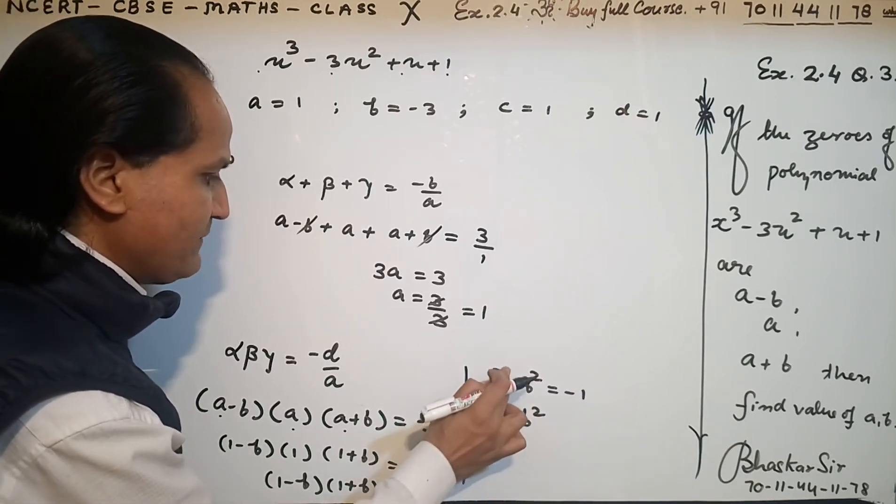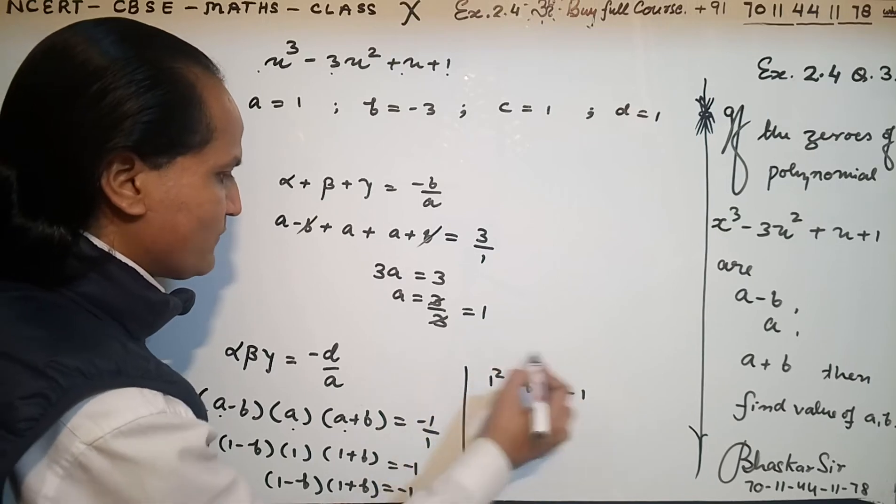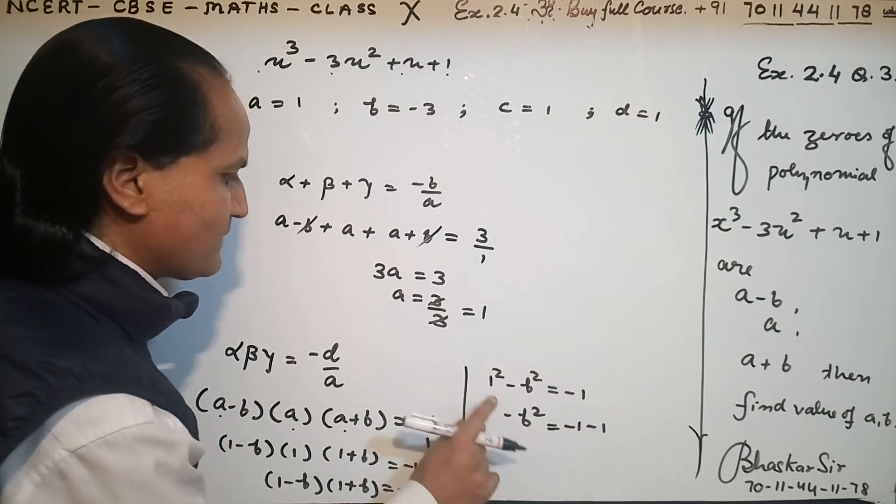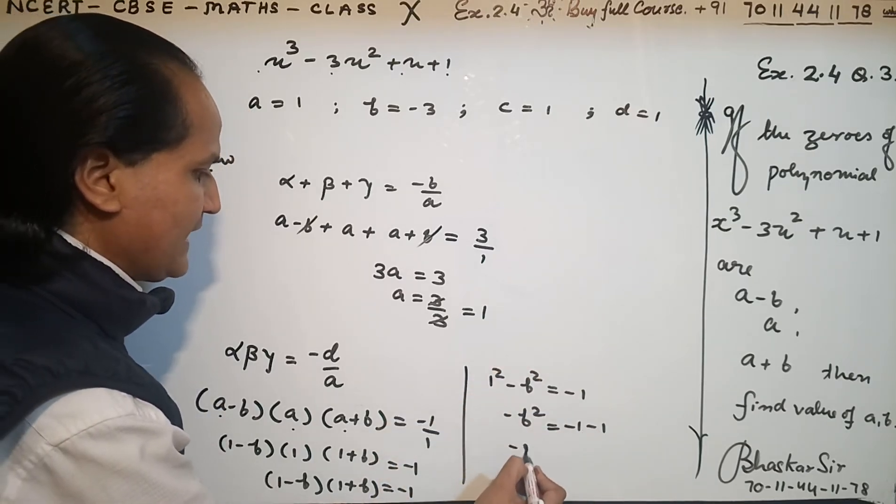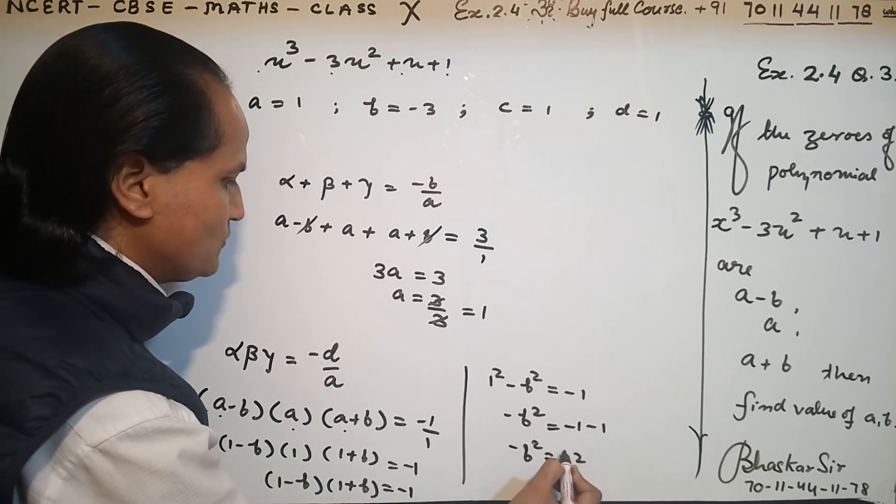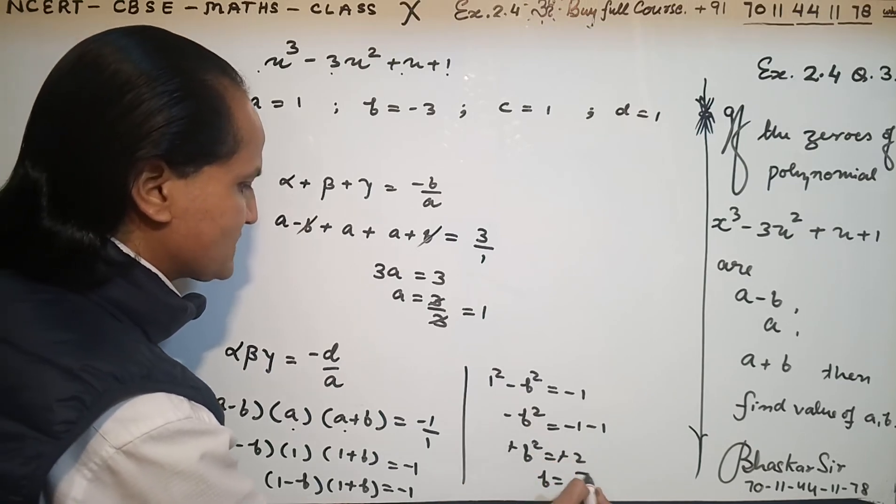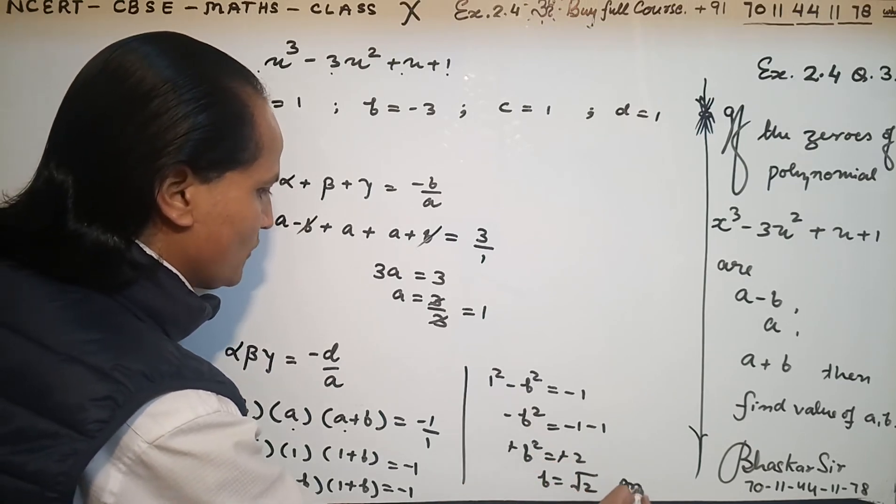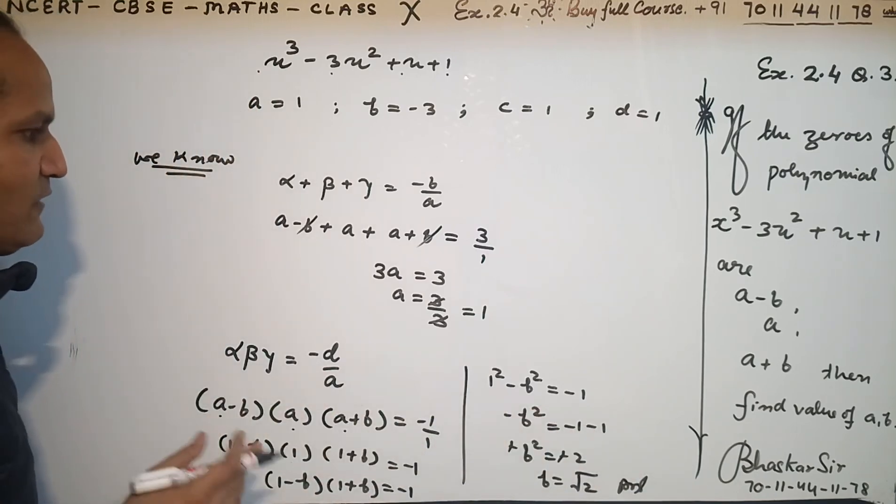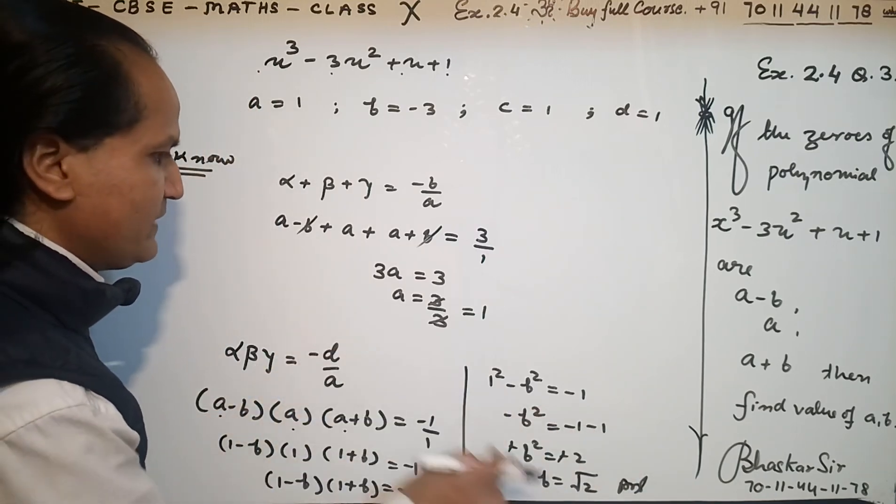1² means 1. Transforming to the other side: 1 - b² = -1, so b² = 2, and b = √2. Easily I have both values a and b.